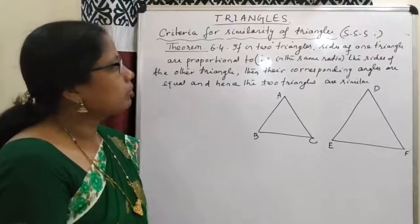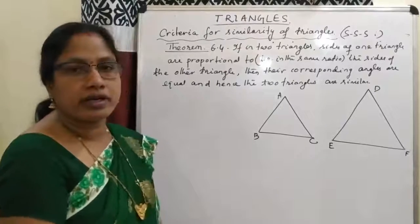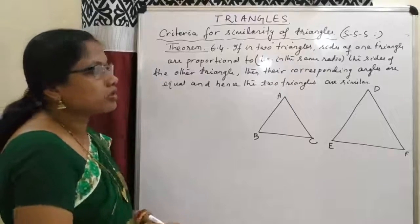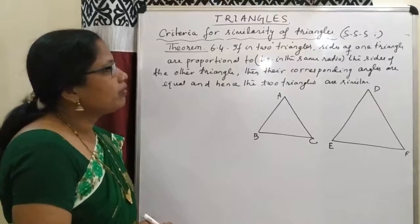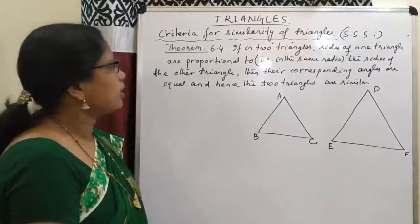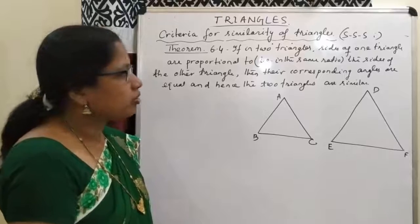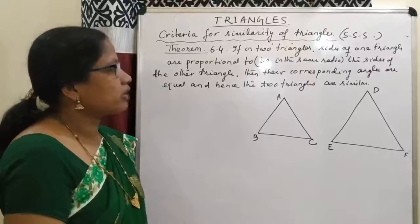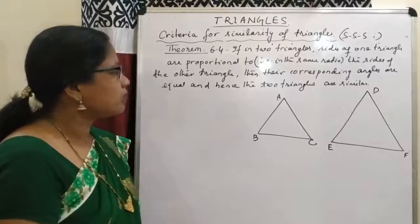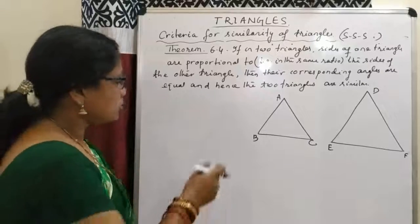Next theorem is the SSS similarity criterion of two triangles — Theorem 6.4. The statement is: if in two triangles, sides of one triangle are proportional to the sides of the other triangle, then their corresponding angles are equal and hence the two triangles are similar.